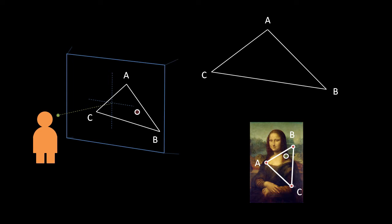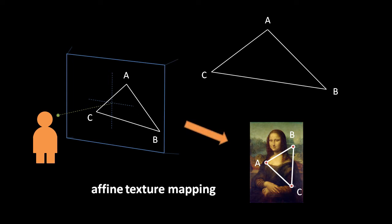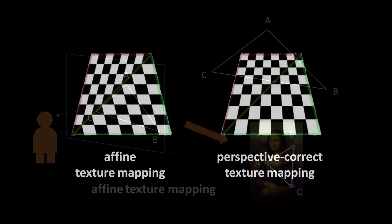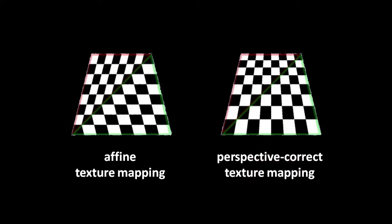Previously, we learned how to interpolate coordinates from one triangle to another, such that we can draw the pixel contents of one triangle into any other. Using this technique to map coordinates directly from the view plane triangle to the texture triangle produces an affine texture mapping. But there's a problem. Here we have two triangles representing a flat rectangular surface that leans away from our viewpoint, and as you can see, affine mapping draws textures with odd distortion.